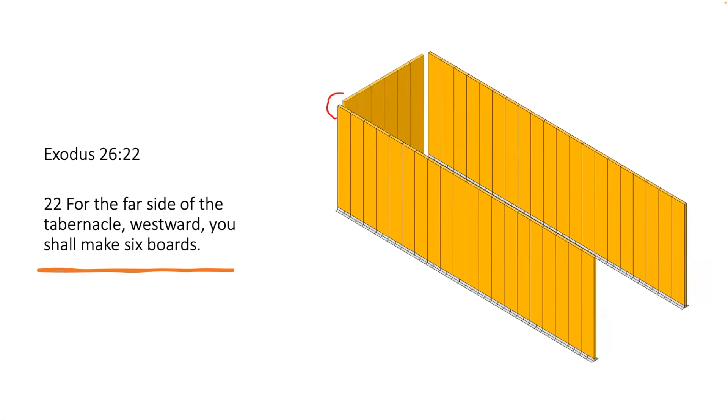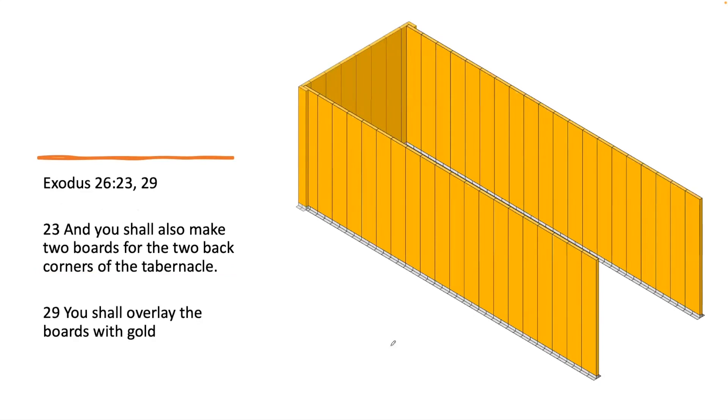Notice that there is a gap here that was filled in by two other boards. Verse 23: 'You shall make two boards for the two back corners of the tabernacle.' Verse 29: 'You shall overlay the boards with gold.' Here we see those two boards, one in each corner.